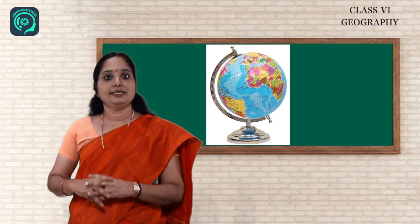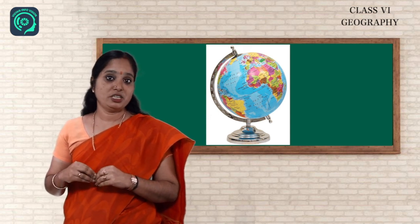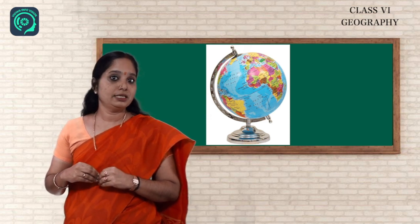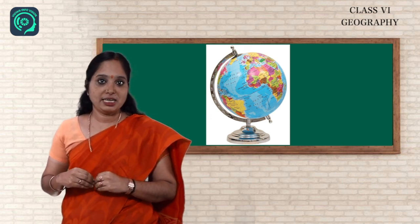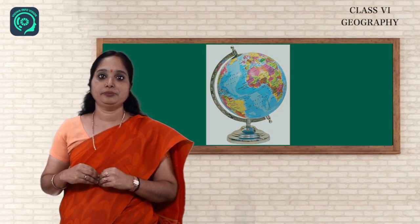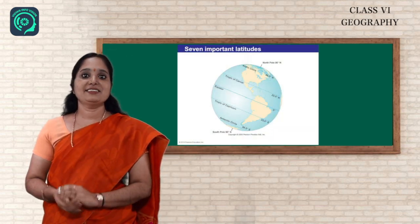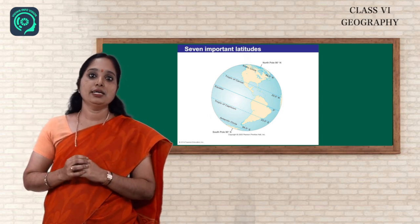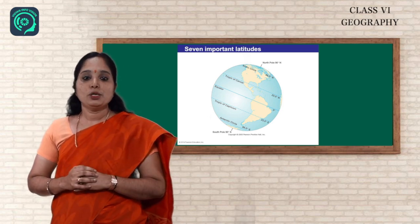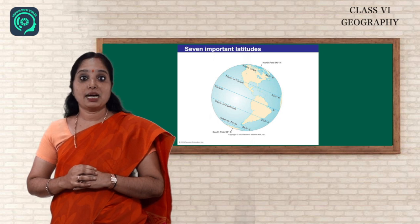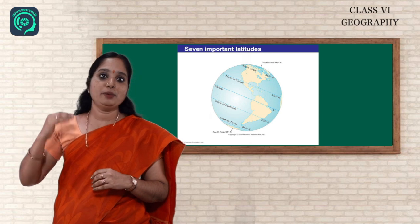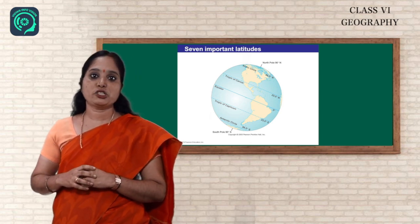Apart from the axis, there are many other imaginary lines which help us to locate places. First, we will learn about the imaginary lines called latitudes. Imaginary lines that run from east to west on the earth are called latitudes. In other words, latitudes are the angular distance measured in degrees. They tell us how far from the equator any place happens to be.